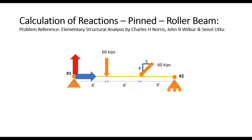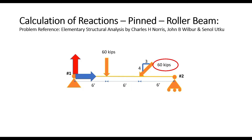Before we go ahead with the contents to be discussed today, let us do a quick recap on what we had done last week. Last week, we had taken this problem of a statically determinate beam pinned at node number one and having a roller support at node number two, being subjected to two point loads: a vertical point load of 60 kips and an inclined point load of 60 kips inclined at the given slope.